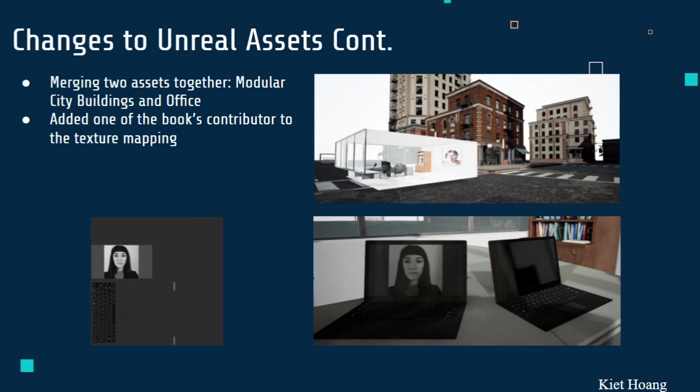Next, we have the merging of the modular city buildings and office. Professor Meyer wanted both sets in the same environment, which made things easier for both the team and Professor Meyer because it didn't require constant switching between maps. Maps are essentially pre-built environments — if we isolated just the office, that would be its own map. Maps also help with alleviating texture rendering burdens when there are many textures.